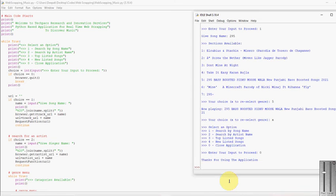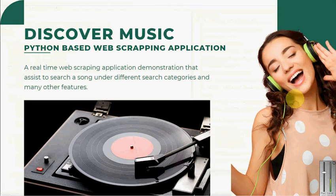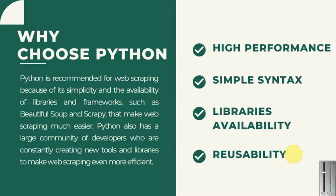Why is Python recommended over other languages? Python is recommended especially for web scraping because of the simplicity and availability of libraries and frameworks. Python is very popular now and everyone is shifting towards it, so there are larger communities working on a daily basis. We have a number of examples to work with. Other features include high performance and simple syntax — these are obviously the features of Python.